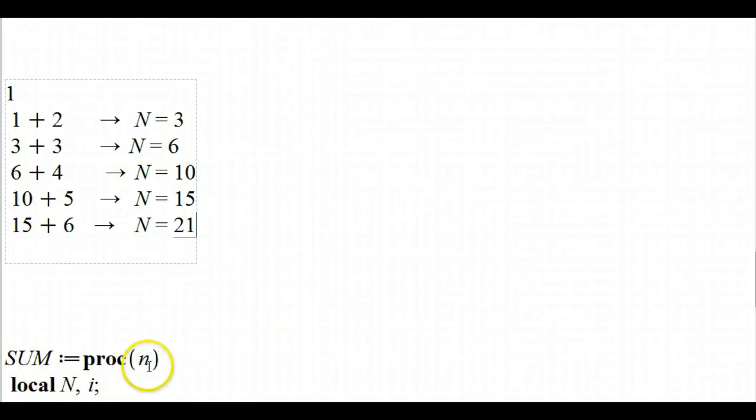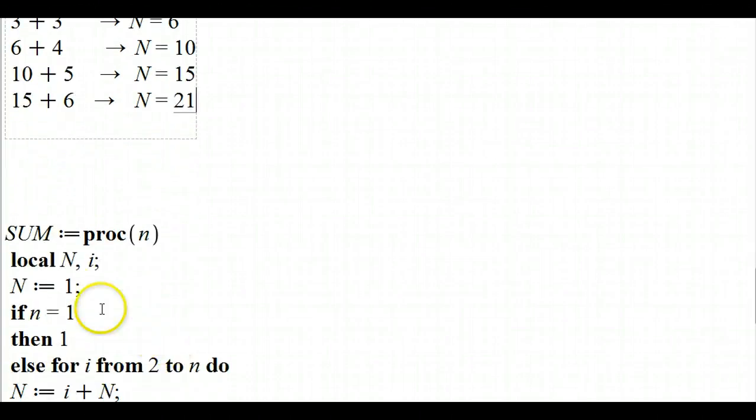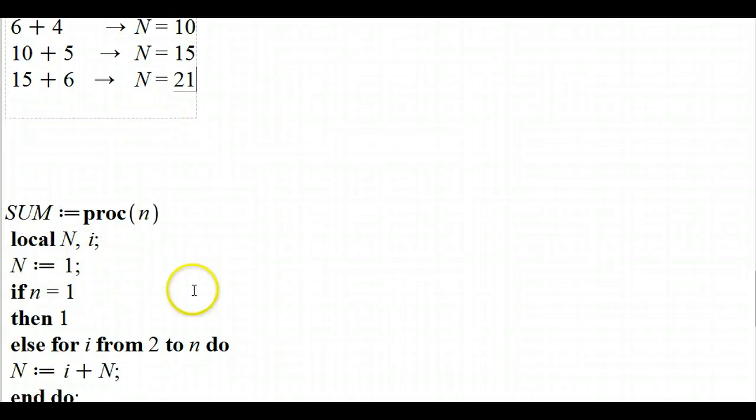We're going to define two local variables, one capital N, one i. And we're going to just define capital N, we're going to first define to be one, right? That's our starting point for that local variable.